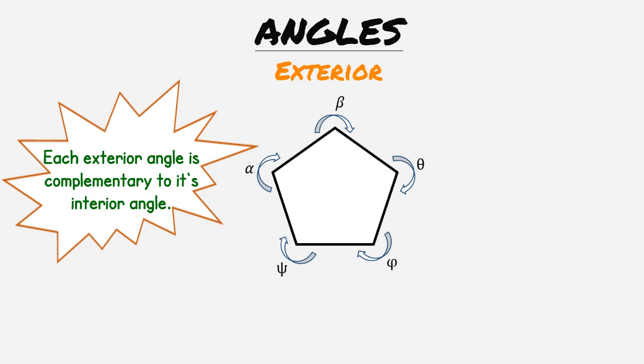The only difference relies on the fact that the equation for the sum of angles changes slightly. Instead of subtracting 2 from the number of nodes we need to add 2. Other than that everything else remains the same as you can see in the following equation.